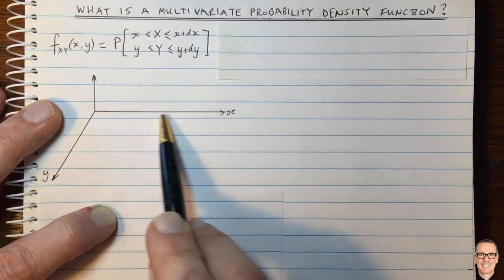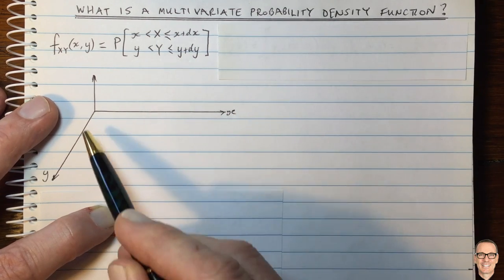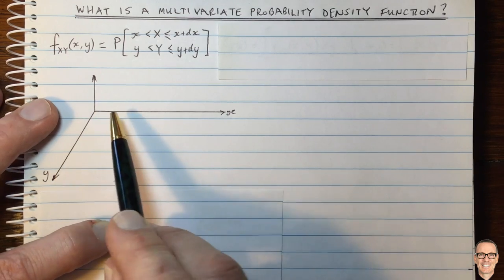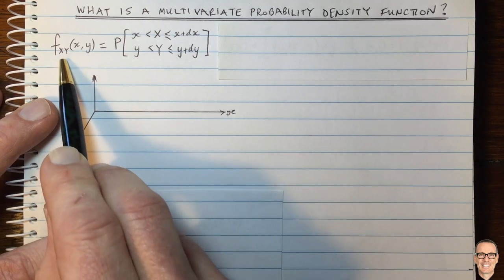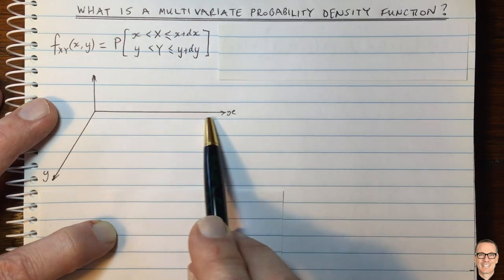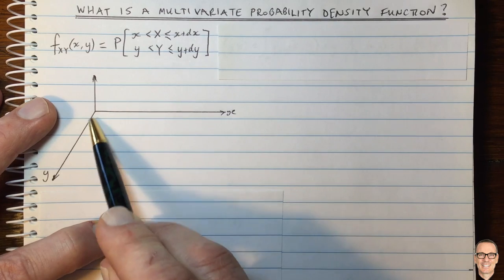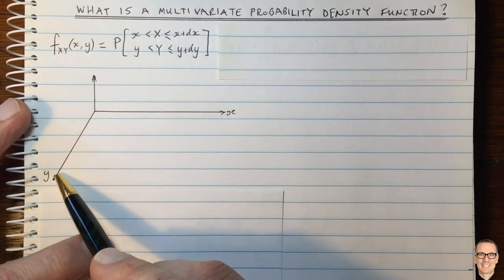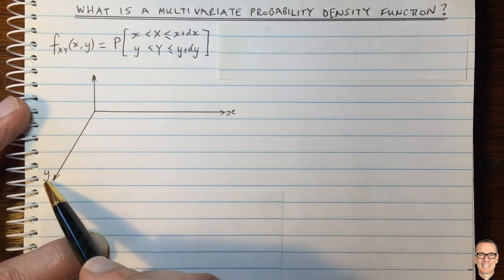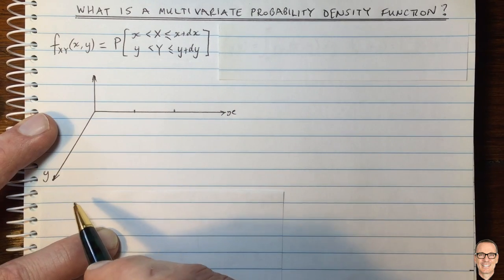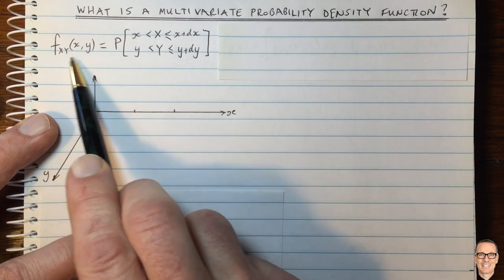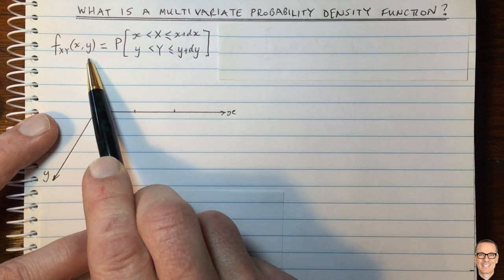So not just having one random variable, but two, means that we can plot this function on a two-dimensional plane, the X and Y plane. Let's consider an example to try to visualize this function.